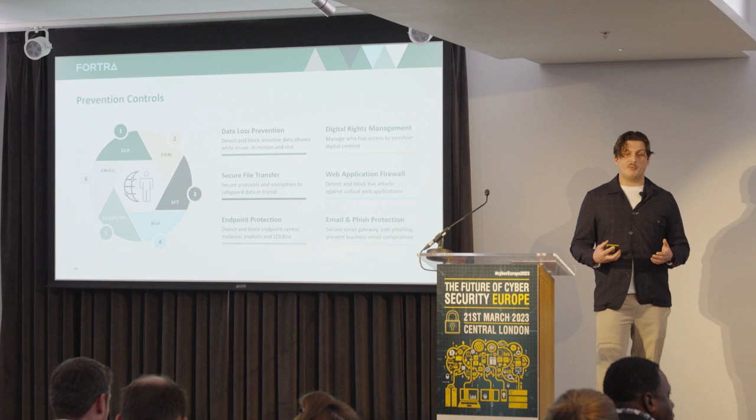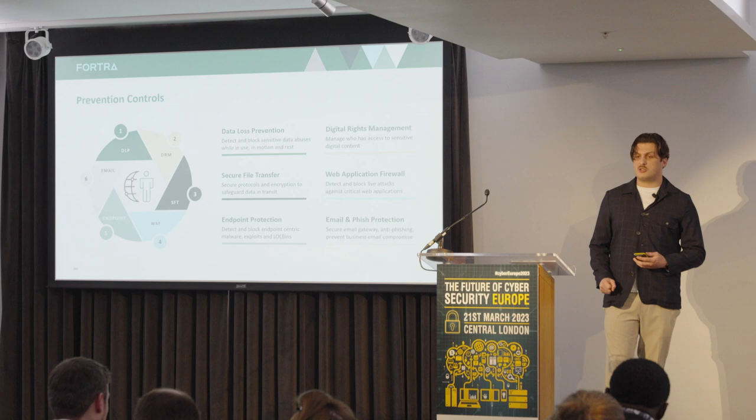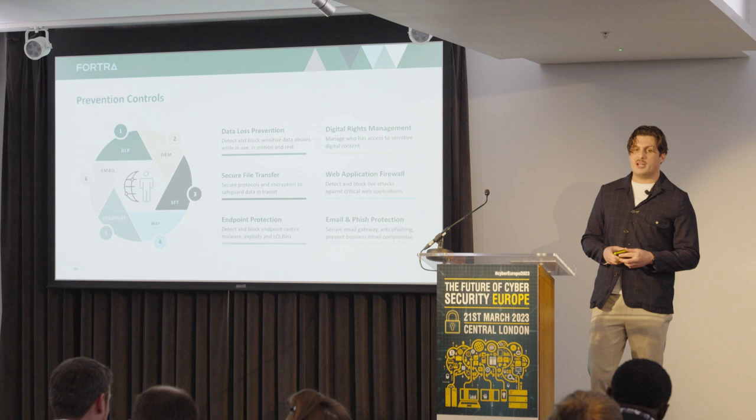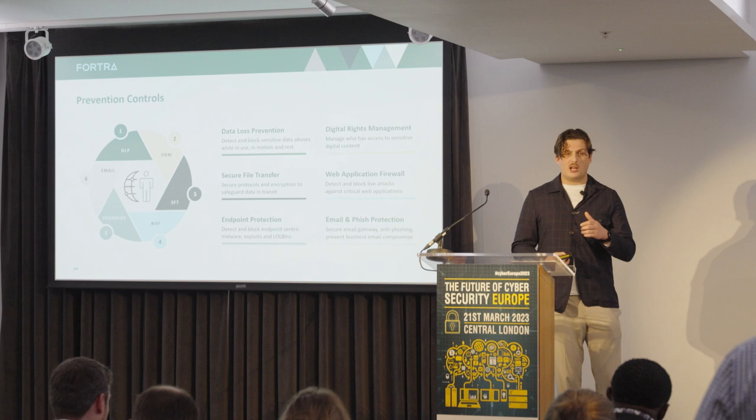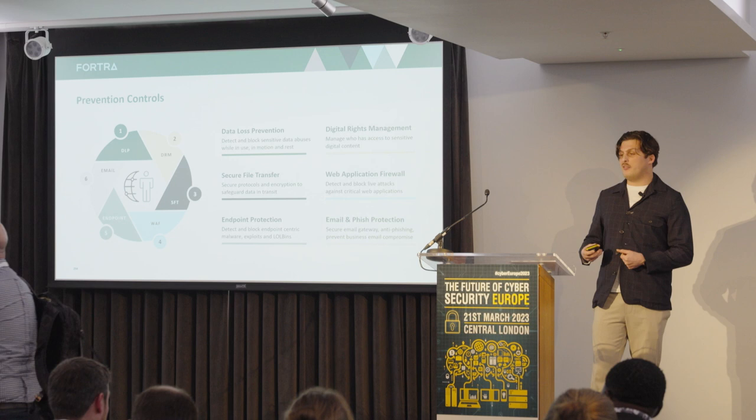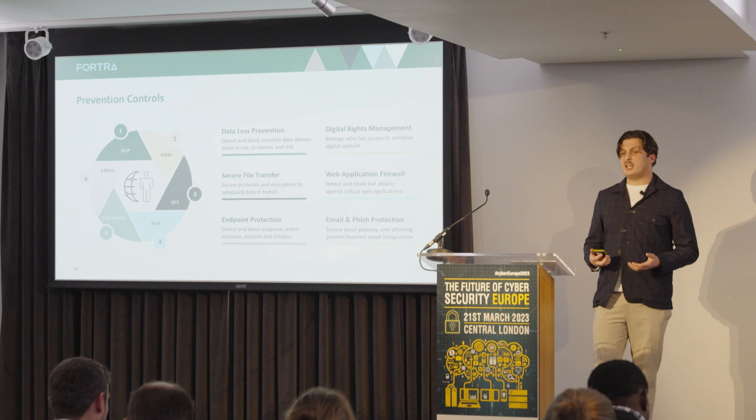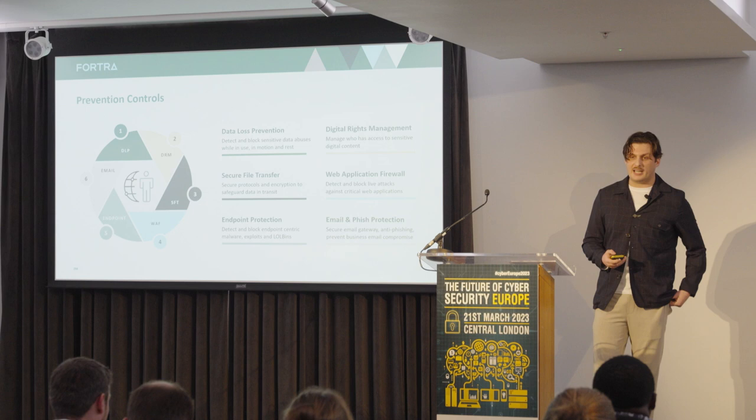Endpoint protection is important because users are targeted a lot and also make mistakes — so when they click on a phishing email, endpoint controls can block that type of malware. Finally, email and phishing protection can identify potentially risky emails, redact them so employees can't click malicious links, or perform education around them — stopping them from clicking a link that steals credentials, drops malware, or causes them to respond to a fraudulent invoice and direct funds to a malicious bank account.